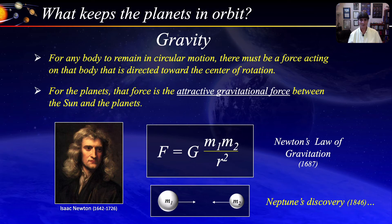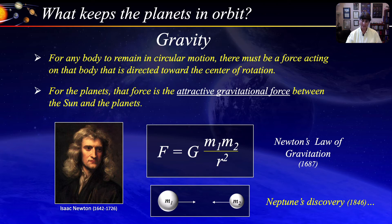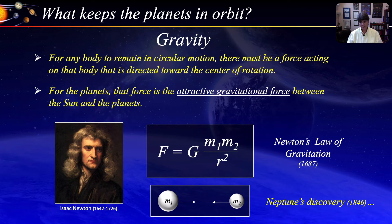Earlier I promised you the story of Neptune's discovery — a beautiful application of Newton's law. Neptune was the first planet to be discovered based on the prediction of its existence. Shortly after Uranus was discovered in 1781, astronomers noticed deviation in its predicted orbit. Eventually, they concluded that there must be another planet farther away causing the apparent gravitational perturbations. Based on their data, they aimed their telescope at the calculated location, and lo and behold, they found the new planet. Neptune was predicted to exist based on the laws of physics, and then it was discovered as predicted.